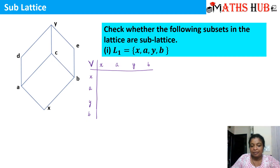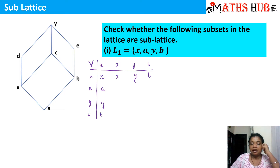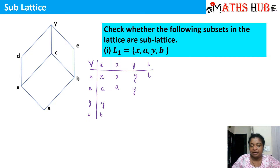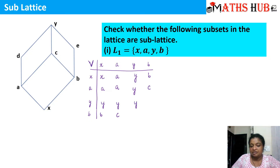Let's complete the entries. x join x is x. x join a — going upward, the first point of contact is a. x join y is y. x join b is b. So we fill: x, a, y, b. Next, a join a is a. a join y is y. a join b — a and b meet at c, so a join b equals c. Then y join y is y, y join b is y, and b join b is b.